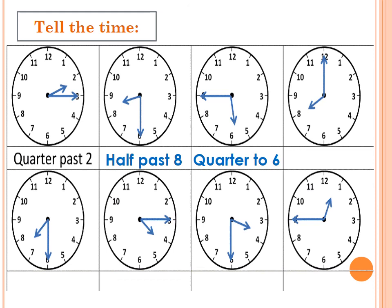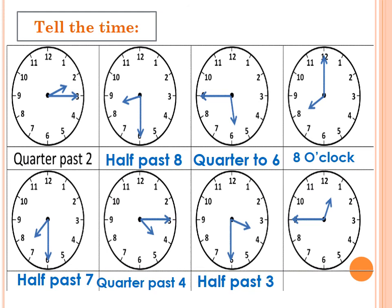Here is the long hand on six — so it's half past. Look at the short hand: half past seven. The next one is quarter past four. Excellent. Then, it's half past three. And the last one: the long hand is on nine, so it's quarter to. Quarter to what? It's a quarter to one.